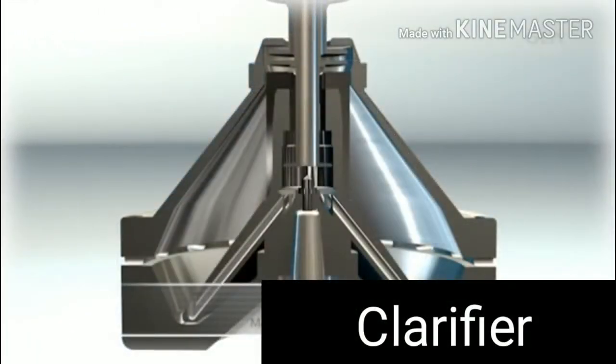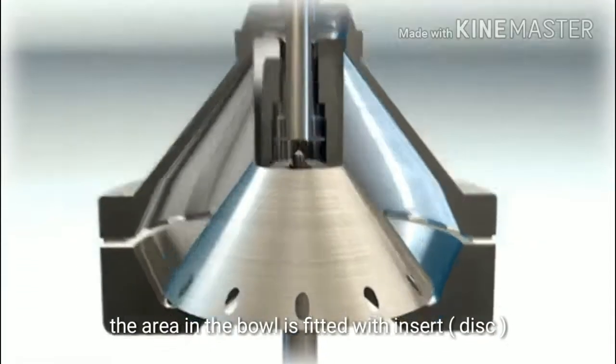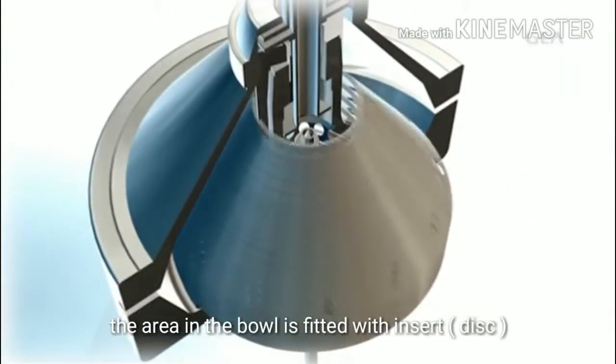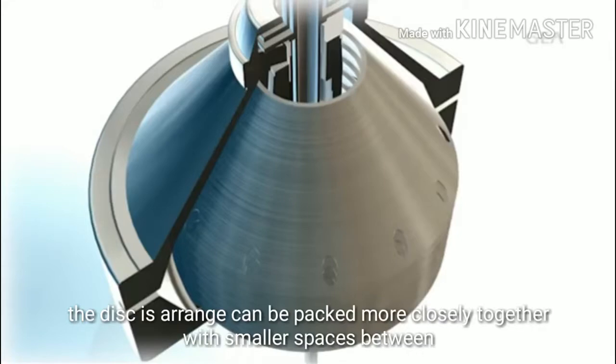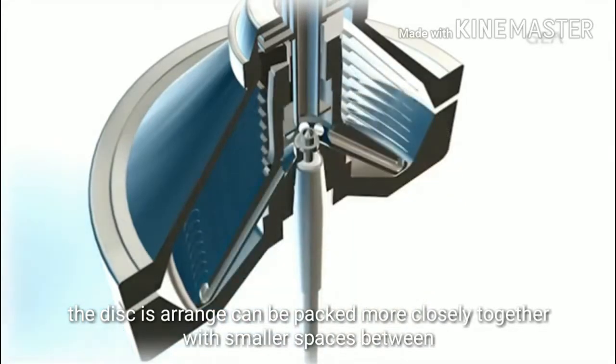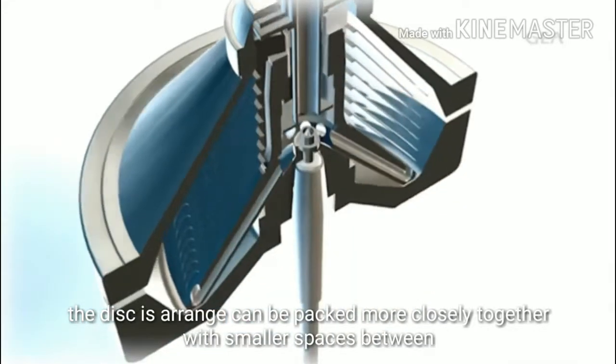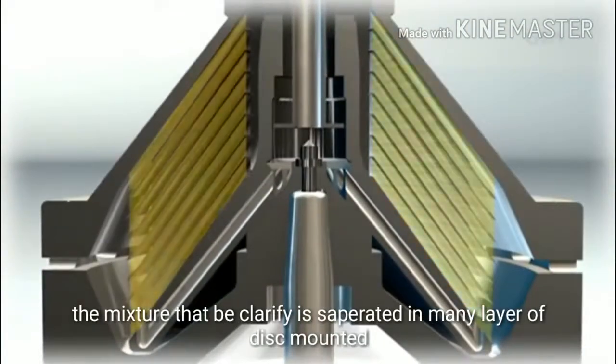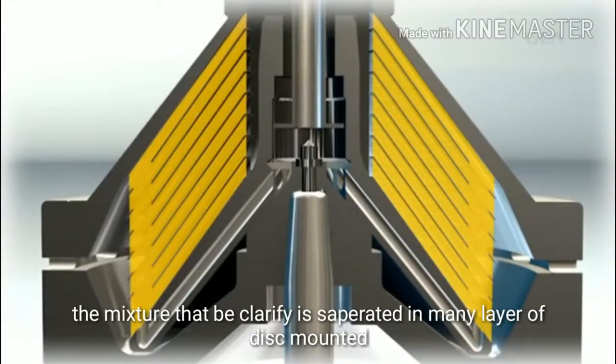Similar to the vessel mentioned above, the area in the bowl is fitted with inserts. Conically arranged disks can be packed more closely together with smaller spaces between. The mixture to be clarified is separated into as many layers as there are disks mounted.